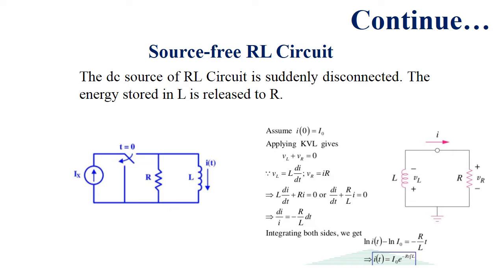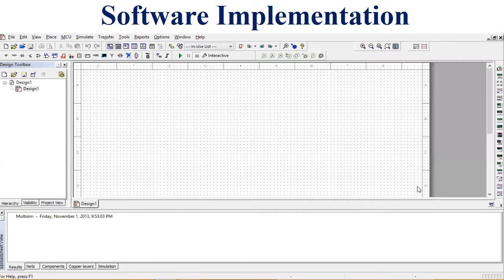When we disconnect the supply from the circuit, the inductor current rises and is then dissipated across the resistor. Because the current follows an increasing then decaying stage, we represent the current factor in exponential form in the equation.